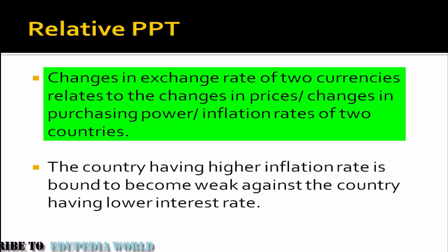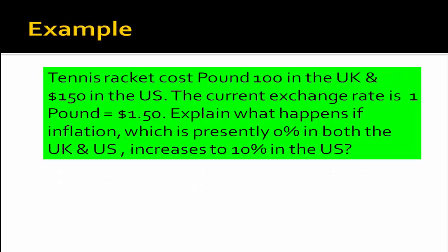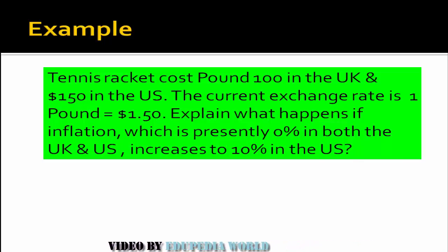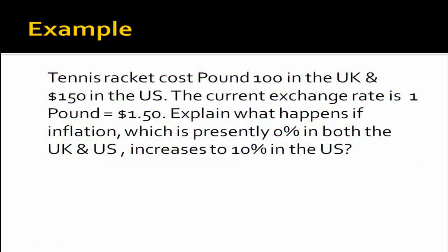The next fundamental is Relative PPP, which states that the change in exchange rate of two currencies relates to the change in prices, purchasing power, or inflation rate. As per Relative PPP, a country with a high inflation rate will tend to become weaker relative to another country. For example, if India's inflation rate is 15% and the USA's inflation rate is 5%, and currently dollar 1 equals rupees 50, then: dollar 1 × 1.05 = rupees 50 × 1.15, which means 1.05 = 57.5, so the foreign currency will be at a premium. The US currency will be at premium because it has a lower inflation rate.